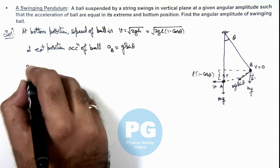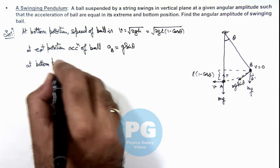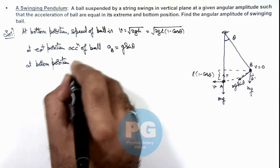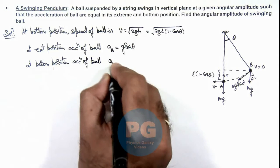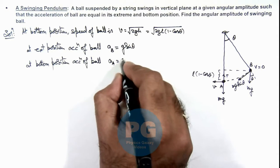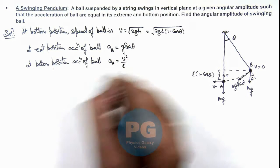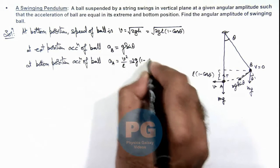So we can write at bottom position, acceleration of ball can be given as aA, we can write here as v²/r, that is l. So on substituting this will give us 2g(1 - cos theta).